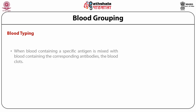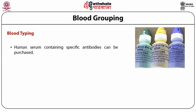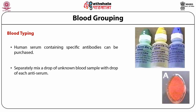When blood containing a specific antigen is mixed with blood containing the corresponding antibodies, the blood clots. Human serum containing specific antibodies can be purchased from the market. To perform blood typing, separately mix a drop of an unknown blood sample with a drop of each antiserum, observe the reaction, and that will identify the blood group.